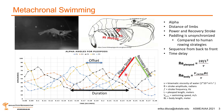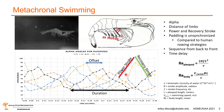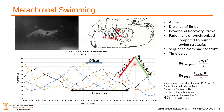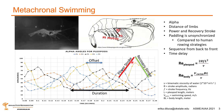A power stroke is when the limbs or pleopods go from forward-facing to backward-facing in order to increase swimming speed, corresponding to a low alpha to a high alpha. A recovery stroke is when the pleopods return from backward-facing to forward-facing as an energy-efficient way to return to the power stroke position, corresponding to a high alpha to a low alpha.